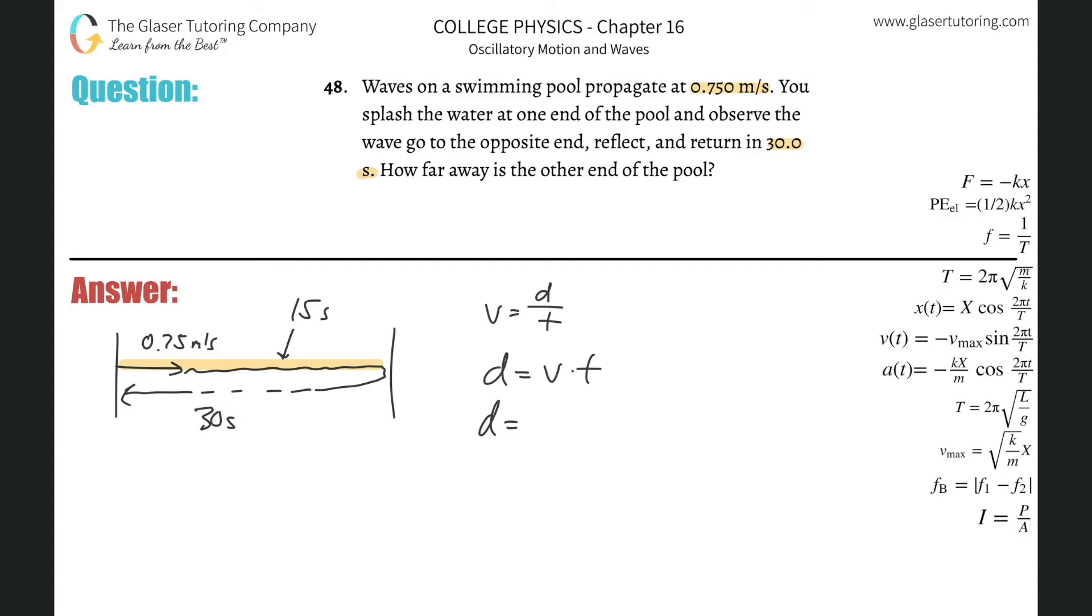The distance is going to be equal to the velocity, which is 0.75, they told us, and the time it takes was going to be 15 seconds. So simply just multiply them together. So 15 times 0.75, and what do we get? 11.25.